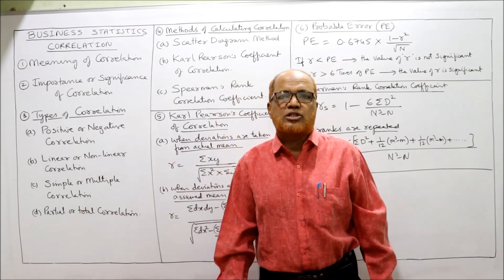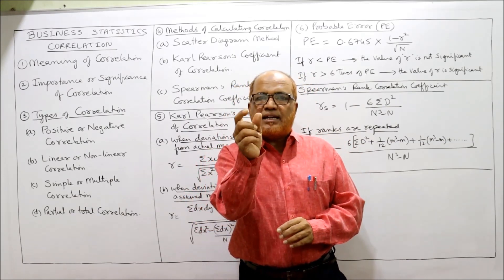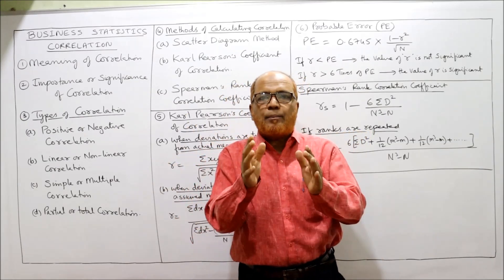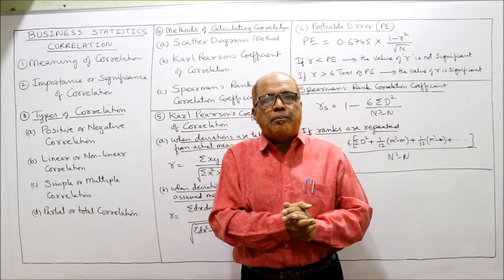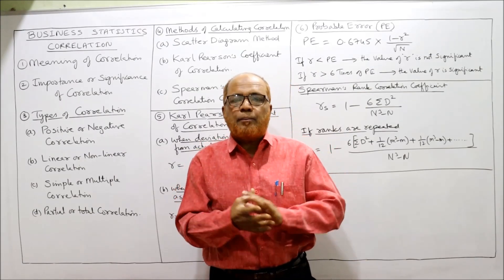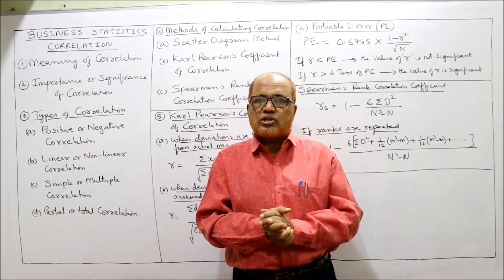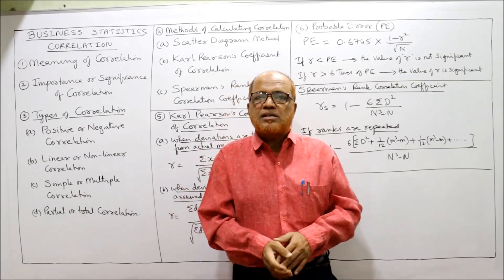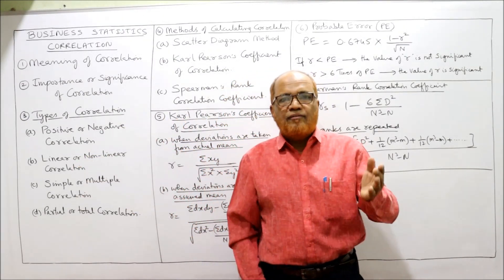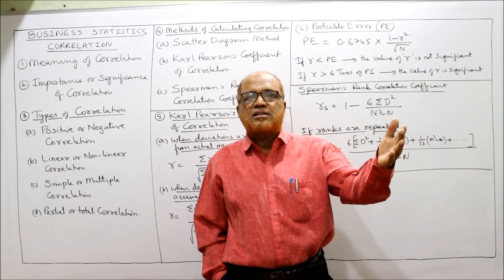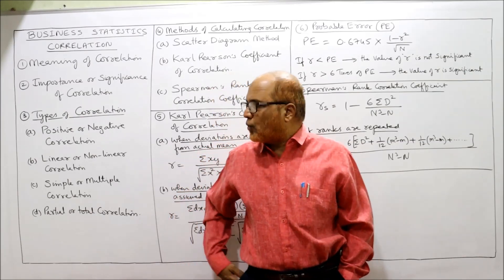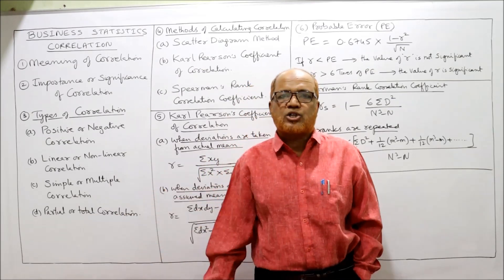Next is linear or nonlinear correlation. Linear means proportional — the percentage change in X is exactly equal to the percentage change in Y. Example: if advertisement increases by 10%, sales also increase by 10%. However, in real practice we seldom come across linear relationships. Normally relationships are nonlinear, meaning the proportionate change in one variable is not equal to the other. Example: advertisement increases by 10% but sales increase by 20% — that is nonlinear correlation.